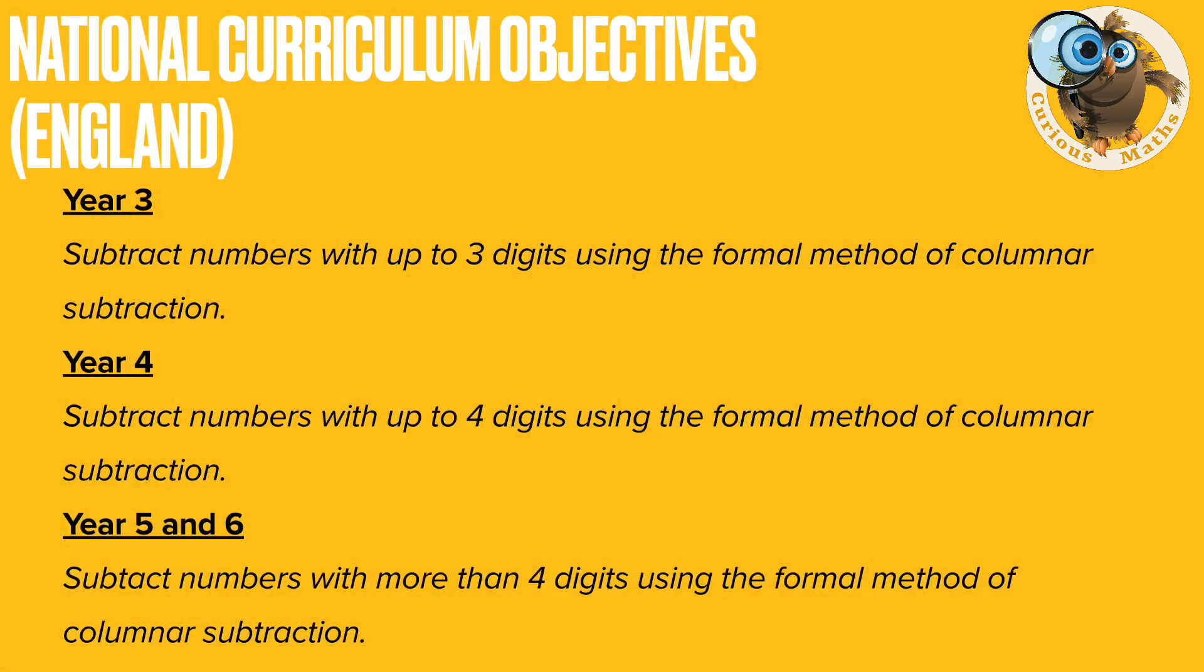For your information, here are the national curriculum objectives in England for teaching columnar subtraction. As you can see, the formal method is recommended in year three and by the time children leave year six we hope that they can subtract numbers with more than four digits using this formal method of columnar subtraction. In this video we will look at how we can use a build it, draw it, write it, say it with columnar subtraction.